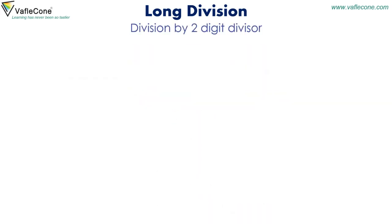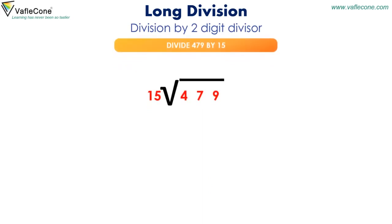Division by two-digit divisor. Divide 479 by 15. Here 15 is the divisor and 479 is the dividend. At the 100's place, 4 is lesser than 15, so we put 0 at the 100's place in the quotient and club the digits at the 100's and 10's place.